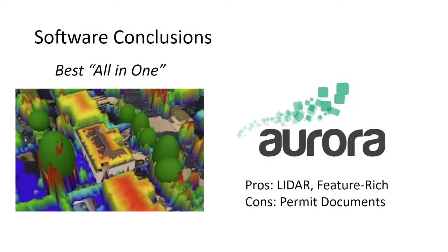The only con I really have against Aurora is that you still need another software for generating permit documentation — they're not trying to be your electrician, they're trying to be your design software. They don't have the same vision as PV Complete does on generating project documents. Energy Tool Base I found to be almost essential for commercial modeling because it can hone in on commercial facility economics so well — especially when you get into demand charge electric rates. It's pretty incredible what you can do with a battery and a solar array on demand charges nowadays.